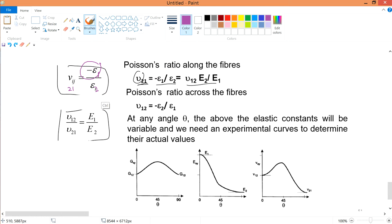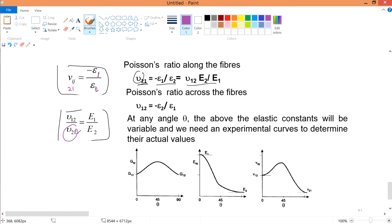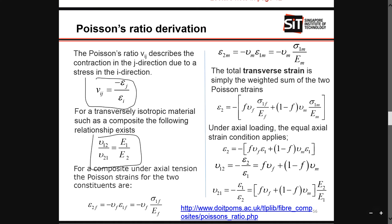It's also equals to this, which is this one. So if you are talking about v21, you're going to bring v21 up, this E2 down, and this E1 down. These E's are your Young's modulus. Hopefully this is pretty clear — at least you know where they are linked to.